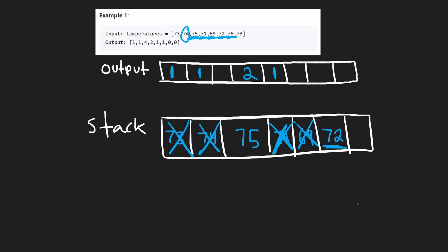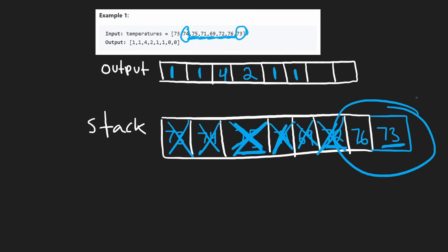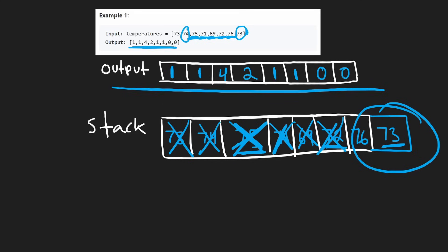Next we get 76 and compare it to the top of the stack. 76 is greater than 72, so we pop 72; it took one day, so we add a one for 72. Then we look at the next top: we finally found a temperature greater than 75 — it took four days. So we add a four in the corresponding output position and pop 75 from our stack. We add 73 next, but 73 is not greater than 76, so we can't pop that. At the end we have no more temperatures and still have two temperatures left in our stack — their default value is zero, as the problem states we put zero when we can't find a greater temperature. And the output exactly matches the expected example.